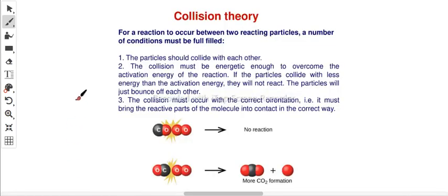The first thing we need to start with is collision theory. We need to focus on three essential points when talking about collision theory. For any reaction to occur or take place, two reactant particles should fulfill the following conditions. These conditions are very important for the particles in order for a chemical reaction to take place.